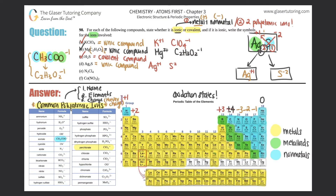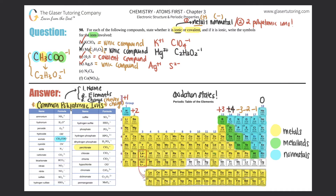Part E: N₂Cl₄. Nitrogen is a non-metal and chlorine is a non-metal — two non-metals, so this is automatically a covalent compound. No ions are necessary because they share electrons rather than forming ions.